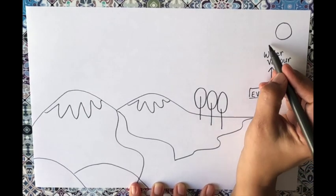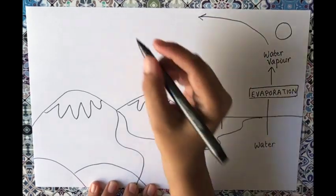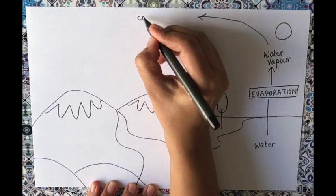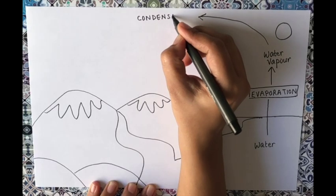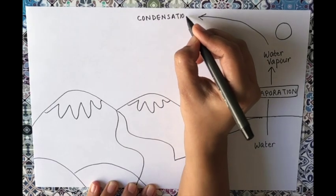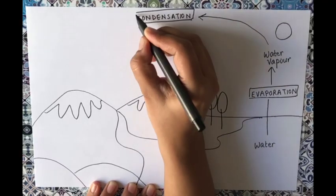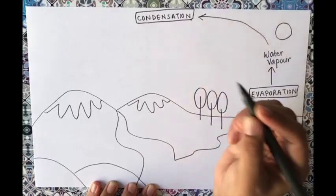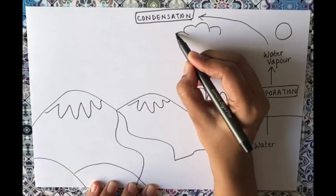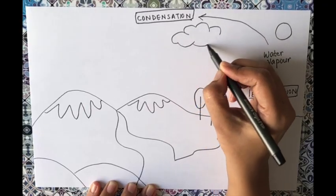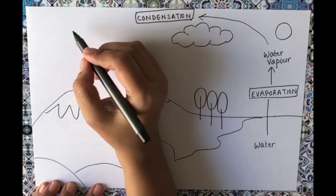All the water vapor collected in the atmosphere keeps rising up, and then cools down high up in the atmosphere. When it cools, a process called condensation occurs. Condensation changes these water vapors into tiny tiny droplets of water.